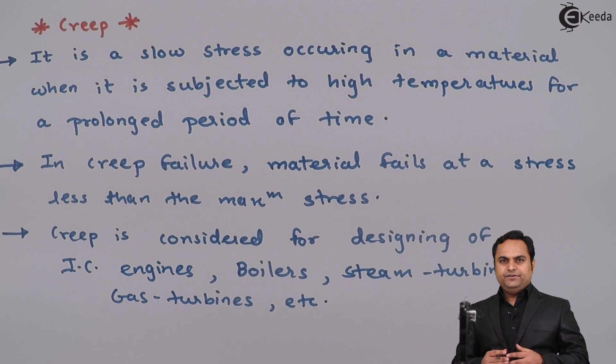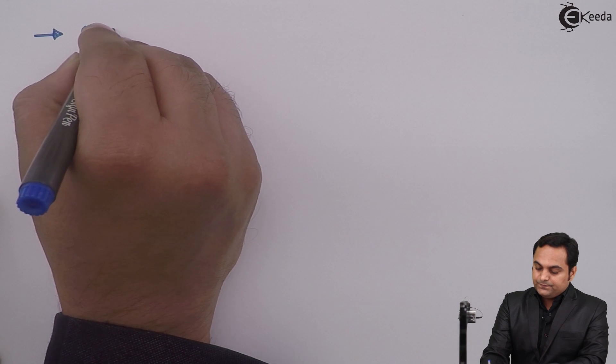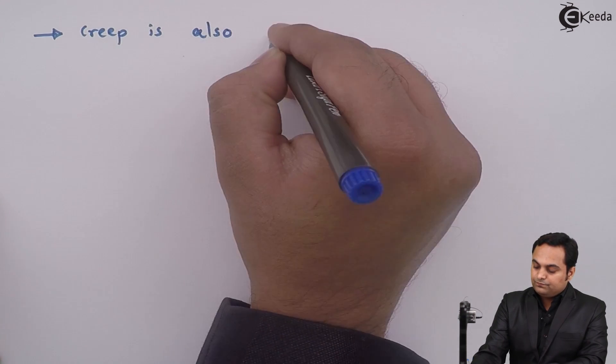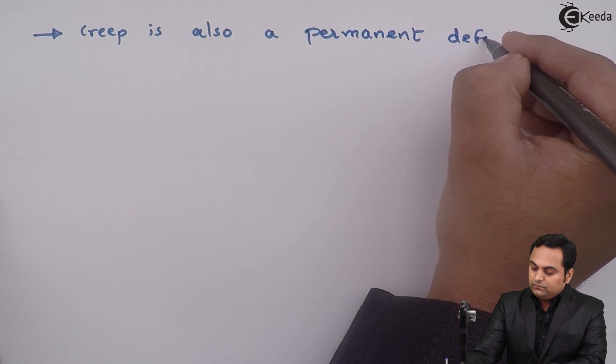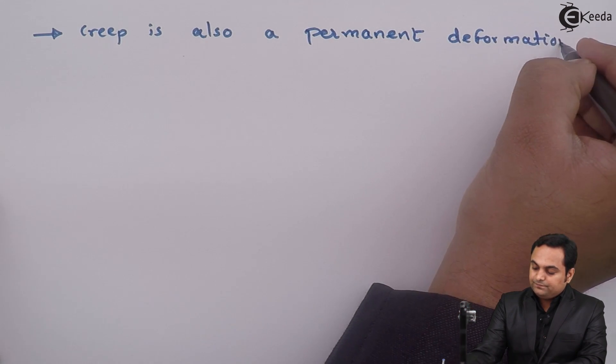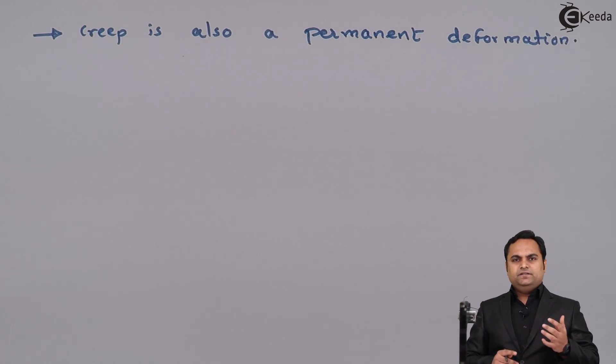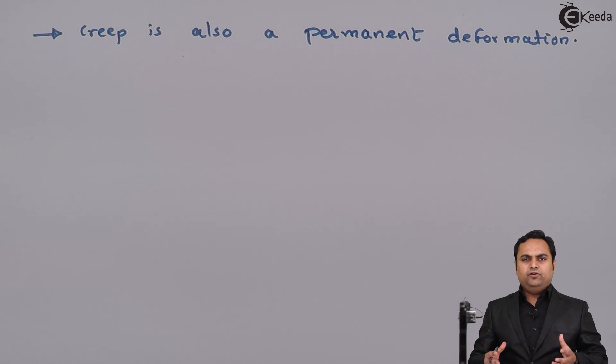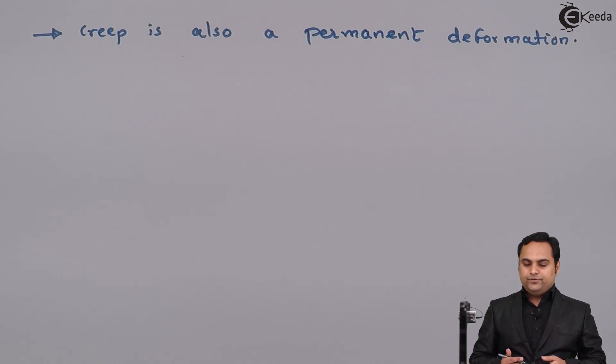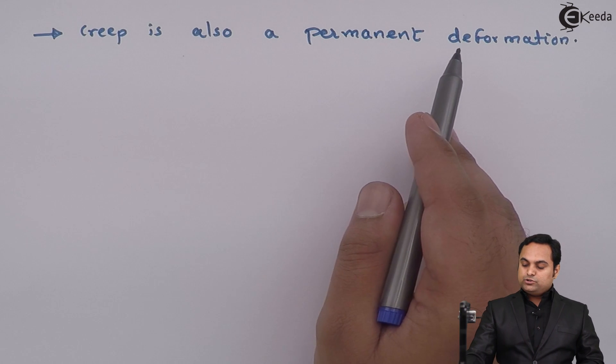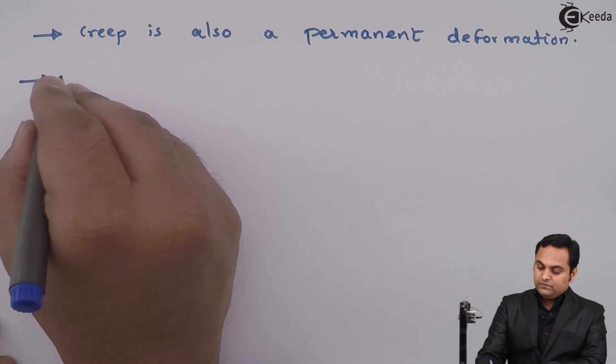Next, creep is also a permanent deformation. That is, when the material fails because of creep, the material gets permanently deformed, the shape changes, and it cannot return back to its original position.